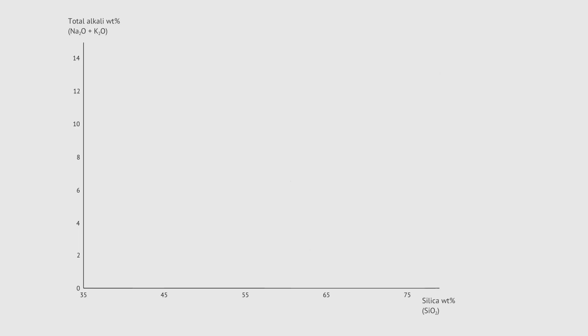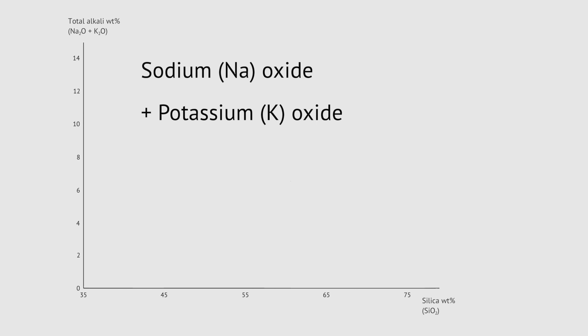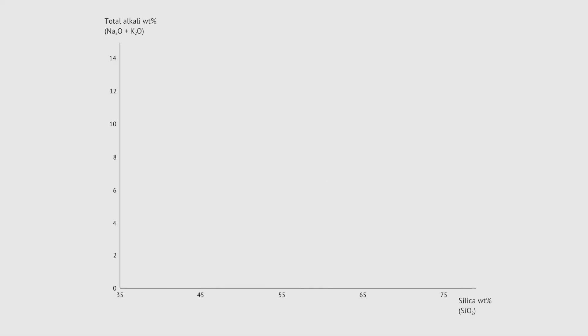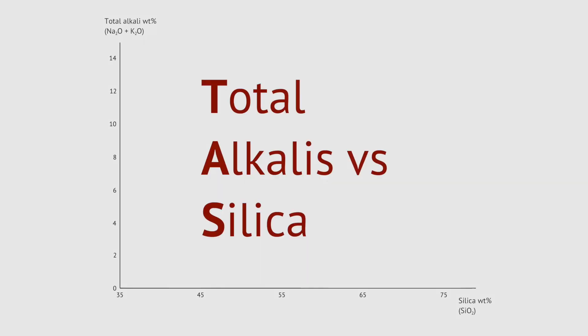Along the vertical axis, we measure the combined amounts of sodium oxide and potassium oxide in the rock of interest. Sodium and potassium are among the highly reactive alkali metals, which sit on the left side of the periodic table. That's why this graph is called a total alkalis versus silica diagram.